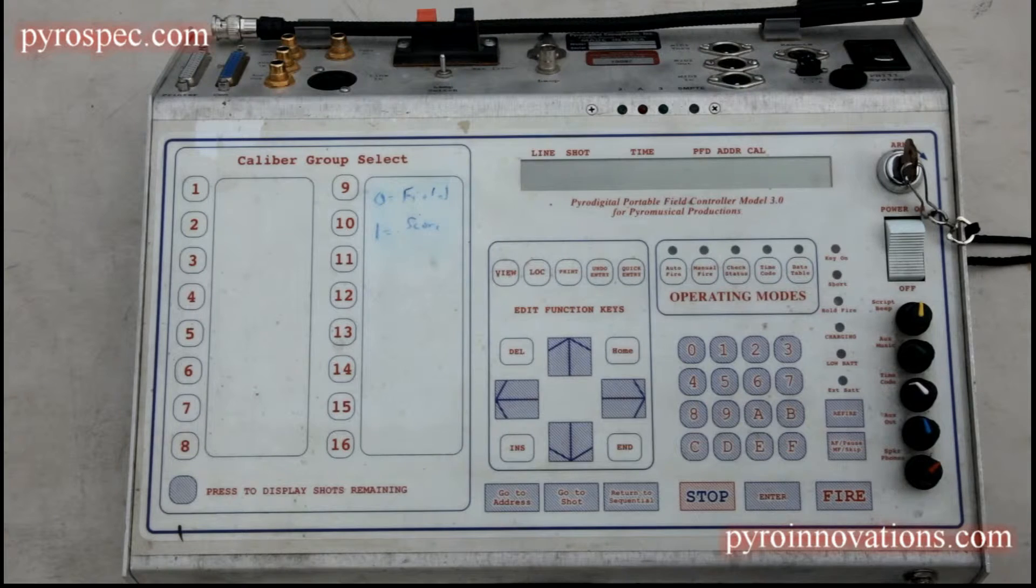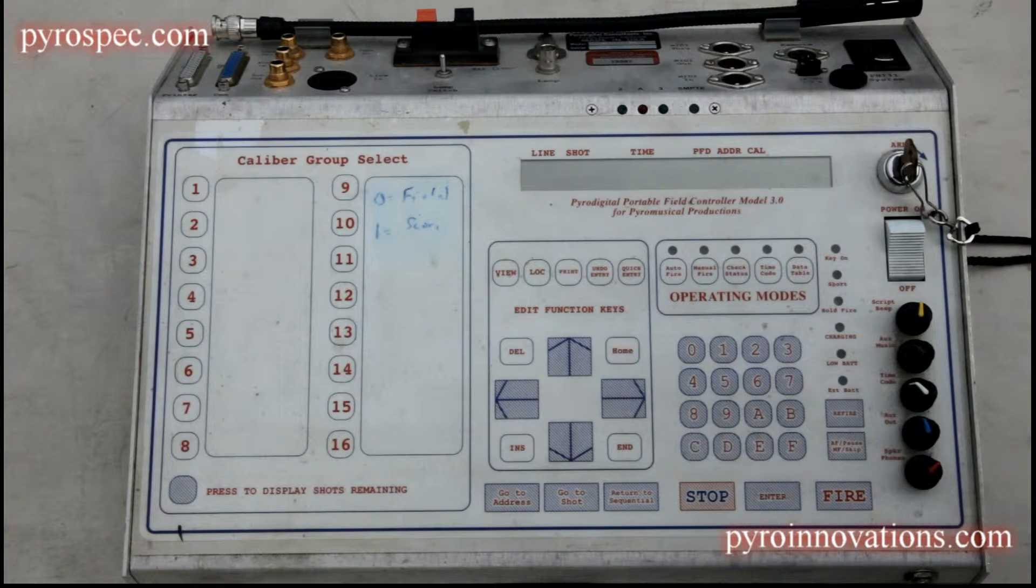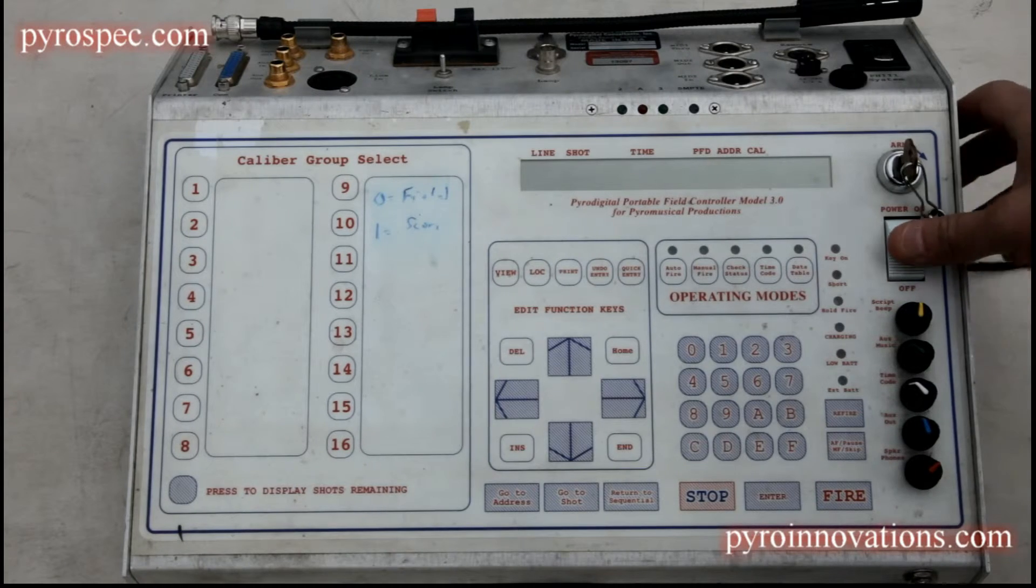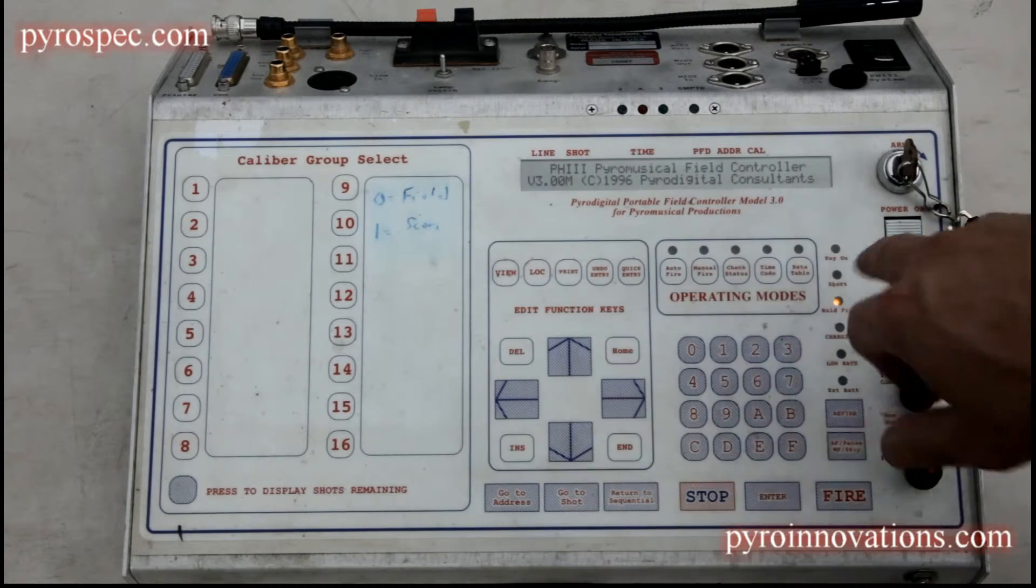We're going to cover how to do a continuity check, or what's known as check status, with the Pyro Digital Field Controller. First thing we're going to do is power it up. It goes into its EPROM check. Normally you'll just let that run. If you're in a hurry, you can hit any of those operating mode buttons and it'll bypass the EPROM check.